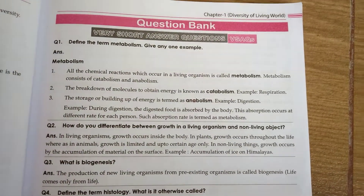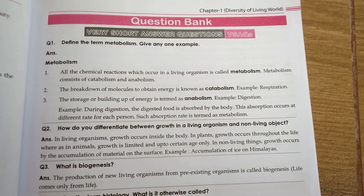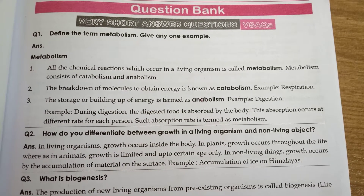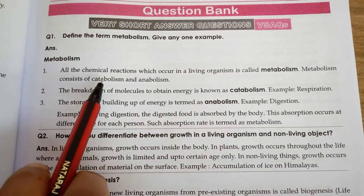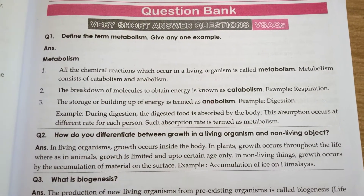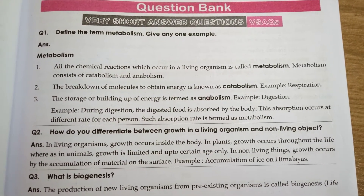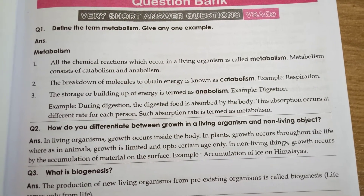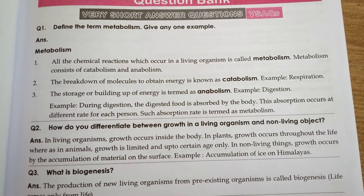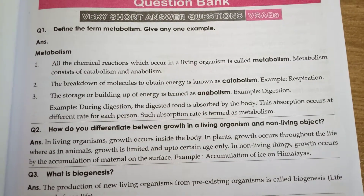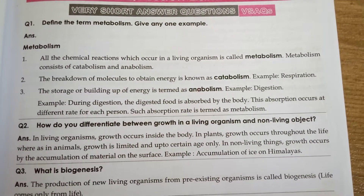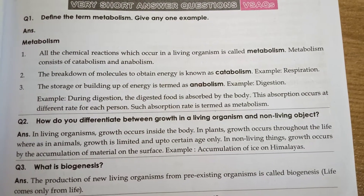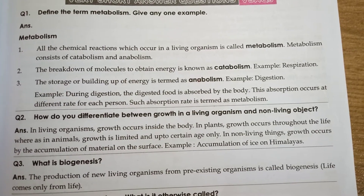Define the term metabolism and give one example. Metabolism is all the set of chemical reactions occurring in the body of a living organism. It is of two types: anabolism and catabolism. Catabolism is the breakdown of molecules to obtain energy. Example: respiration, where glucose is broken down and energy is released.